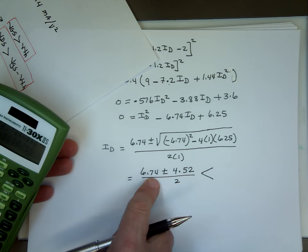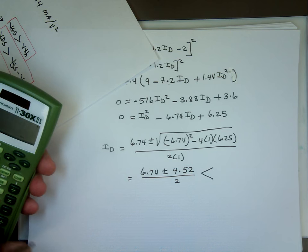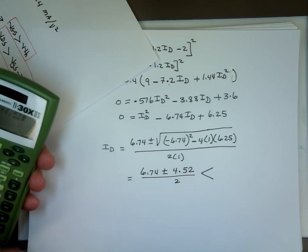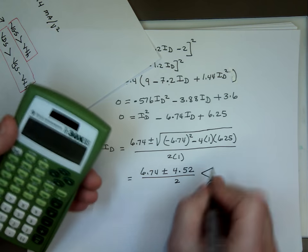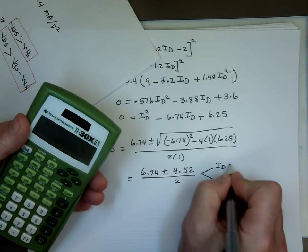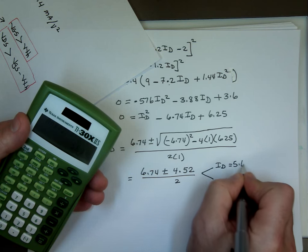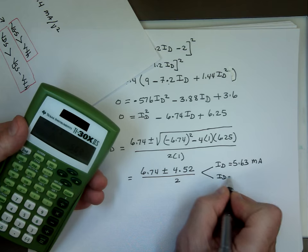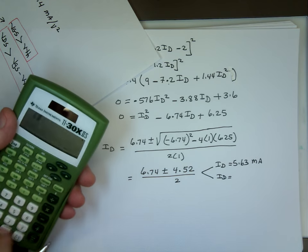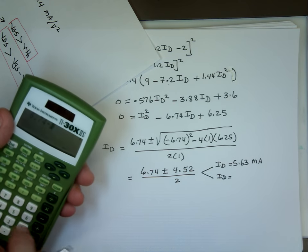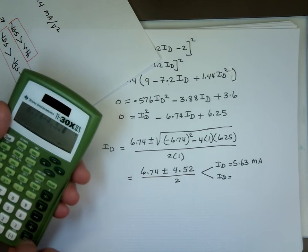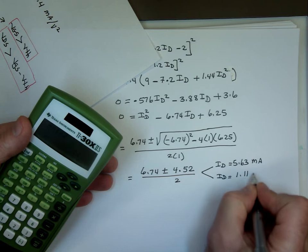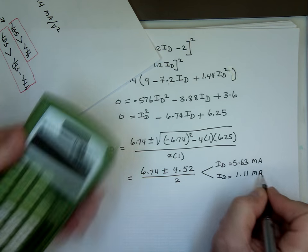So one solution is going to be 6.74 plus 4.52. And you divide that by 2. 5.63 milliamp. And the other one is going to be what? The minus. Divided by 2. And that's 1.11 milliamp. Now one of these is going to be good. One is not. Well, which one is good?